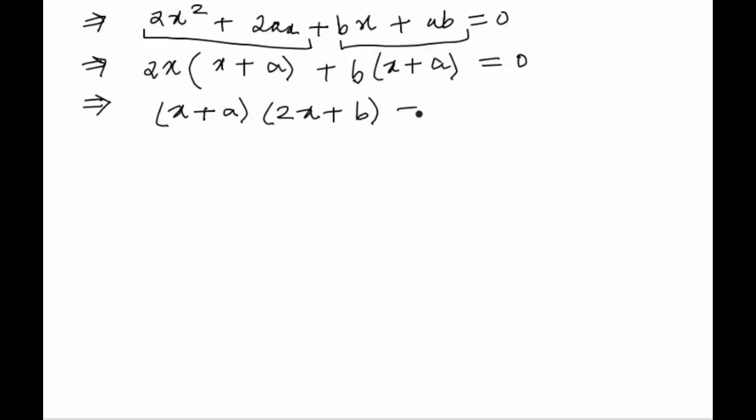Since the product of two terms is equal to 0, so at least one of them should be equal to 0. Therefore, either x plus a is equals to 0 or 2x plus b is equals to 0.